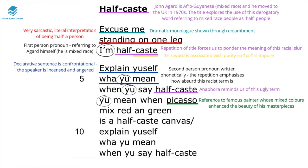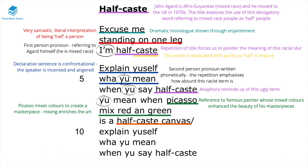Picasso is an extremely famous painter whose mixed colours enhance the beauty of his masterpieces. The idea that mixing leads to impurity or inferiority is actually challenged here, because in the artistic world, mixing something can actually enhance beauty. Picasso mixes red and green to create a masterpiece, reinforcing the idea that mixing enriches things. Then the speaker asks sarcastically: does this therefore make a half-caste canvas? This is a humorous and sarcastic interpretation of the term half-caste.